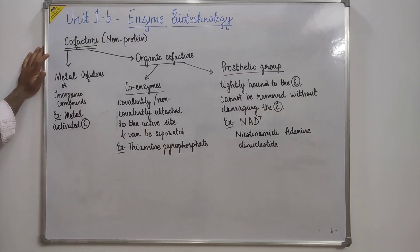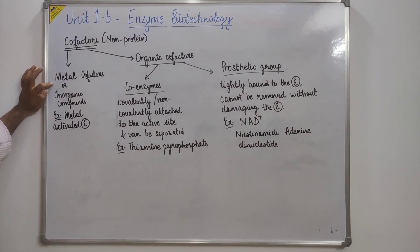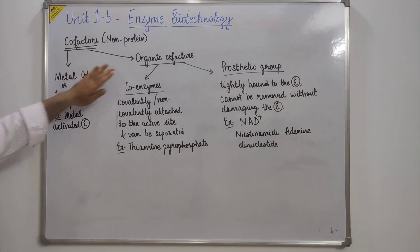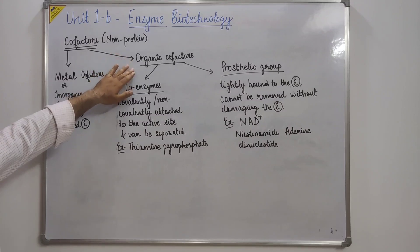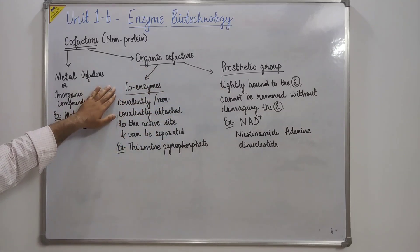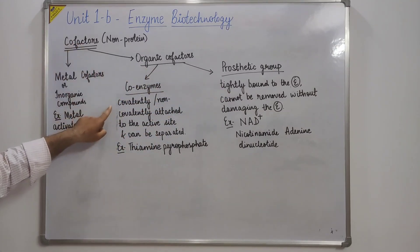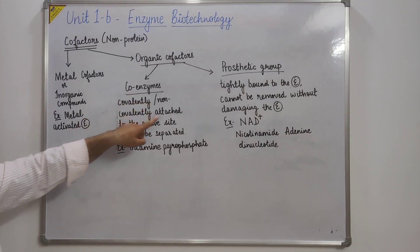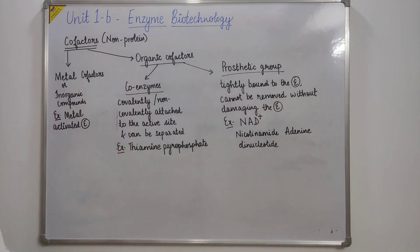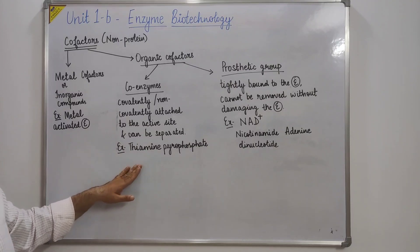Cofactors are non-protein in nature and can be divided into two major classes: metal cofactors, also known as inorganic compounds (example: metal-activated enzymes), and organic cofactors. Organic cofactors can be divided into two classes: coenzymes and prosthetic groups. Coenzymes are cofactors that are covalently or non-covalently attached to the active site of the enzyme and can be separated from the enzyme once the reaction is over — for example, thiamine pyrophosphate.